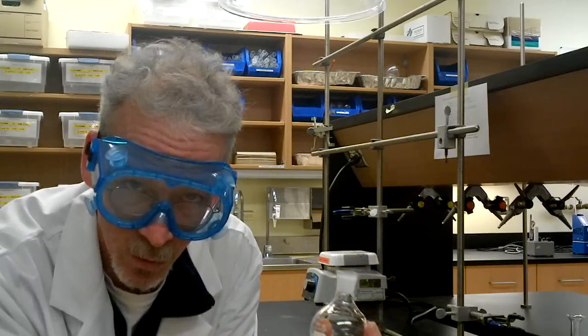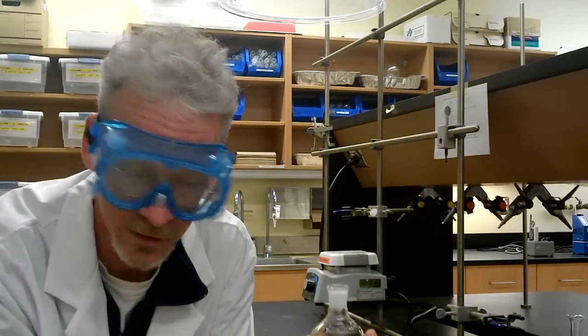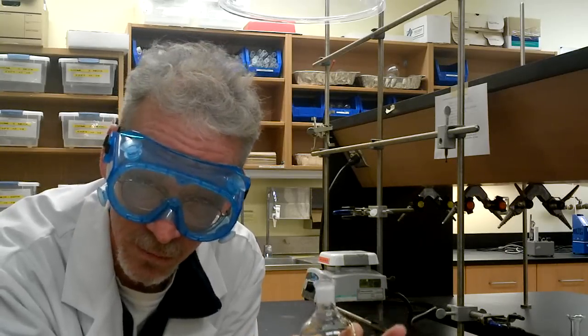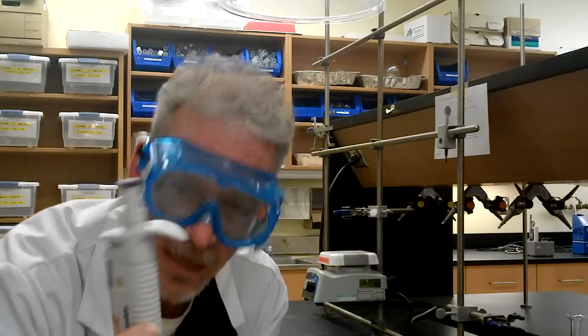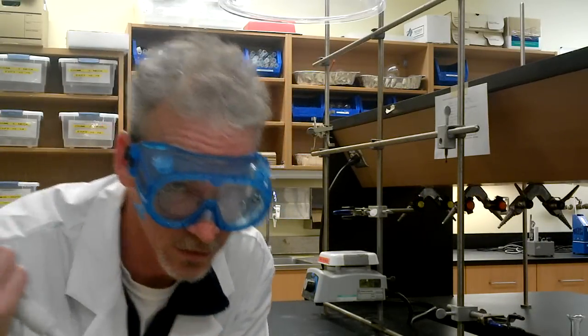We're going to put methylbenzoate in here first, and actually the best way to do that is take this to the fume hood, and we're going to use the Eppendorf and put our methylbenzoate in the flask. I'll go do that now.